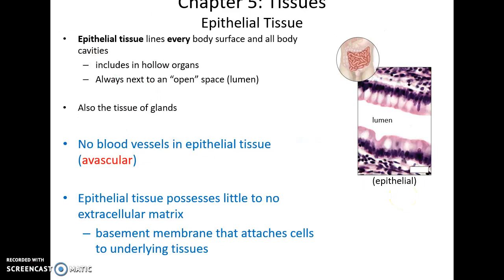We'll start with the epithelial tissue. Epithelial tissue lines every body surface and all body cavities. It's lined to the inside of hollow organs such as the stomach, intestines, and blood vessels. It's always next to an open space — a lumen — that may have stuff in it: gases, oxygen, air, fluids such as blood, things we've eaten.